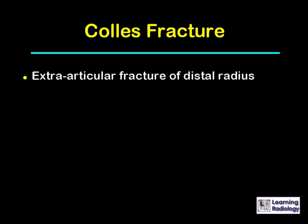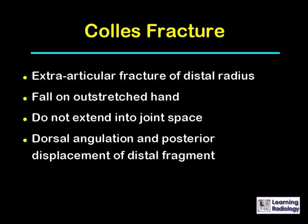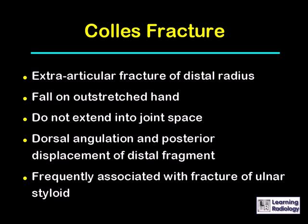A Colles' fracture is an extra-articular fracture of the distal radius. It occurs, as most of these fractures do, by fall on an outstretched hand. Colles' fractures do not extend into the joint space. There is almost always dorsal angulation and posterior displacement of the distal fracture fragment. By convention, all fractures are described by their distal fracture fragment orientation, and it is frequently associated with a fracture of the ulnar styloid, although it does not have to be.